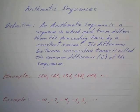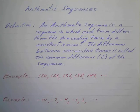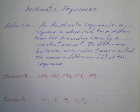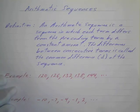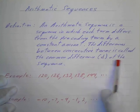We're going to talk about arithmetic sequences. An arithmetic sequence is a sequence in which each term differs from the preceding term by a constant amount. The difference between the consecutive terms is called the common difference. We usually call that just D for difference of the sequence.